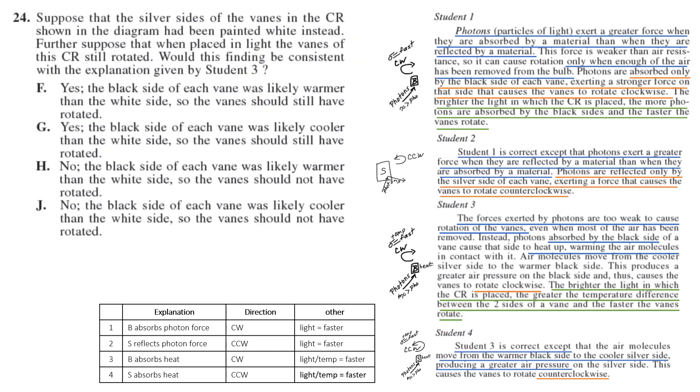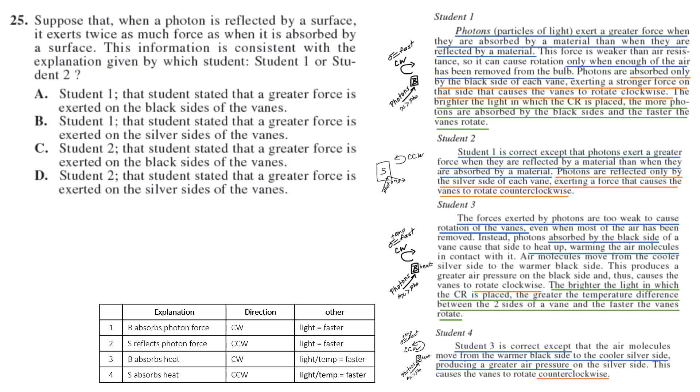Number 24 is a suppose question. You have to extend your knowledge of it. Suppose the silver sides of the veins have been painted white instead of silver, yet the CR is still rotated. Would this finding be consistent with the explanation given by student two? The knowledge here is that silver and white are not that different in how they absorb heat. Black will still absorb more heat than silver and white. So it is consistent because the black side would have still been warmer. So F. Another suppose question. When a photon is reflected by a surface, it exerts twice as much force as one is absorbed. This is consistent with which student, one or two. We know student two is the one who said it reflects off the silver. So it's student two. And student two, choice D, says that greater force is exerted on the silver side of the veins. So D.